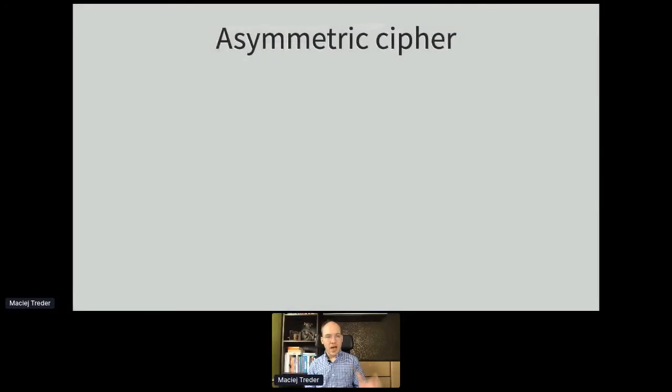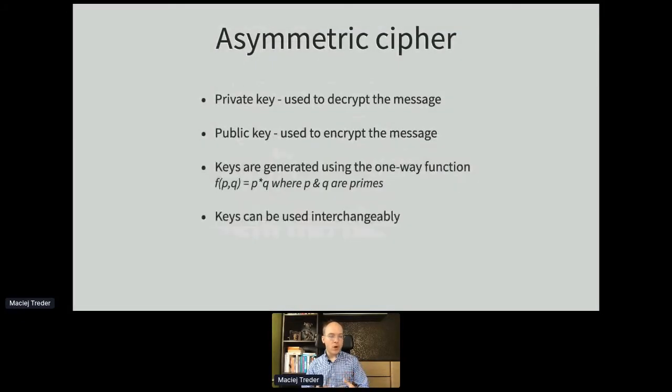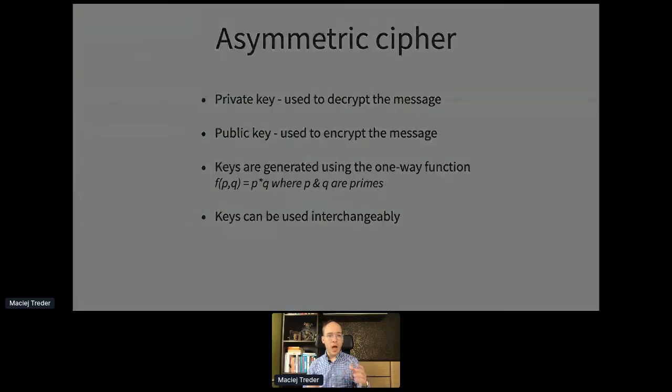So here comes the asymmetric cipher. That's the moment where you are using the private and public key. One is used for encrypting and the other one is used for decrypting the messages. Those keys are generated using the one-way function. What one-way function is, is a function which is easy to calculate in one way to get the output of the function, but it's very hard to guess what has produced this particular output. The best example of one-way function is multiplying prime numbers, because it's easy to do this math, but it's very hard to guess what prime numbers have been used to get the given output.